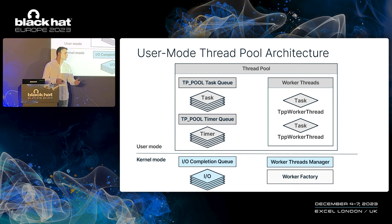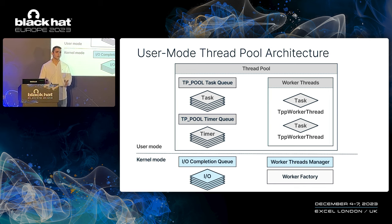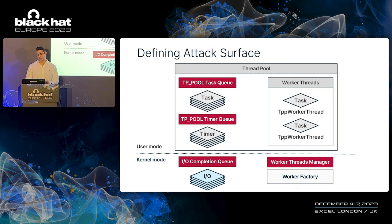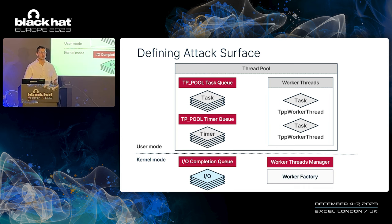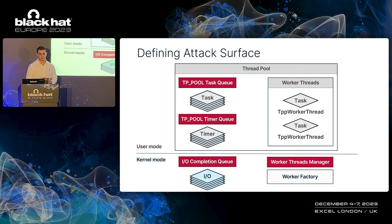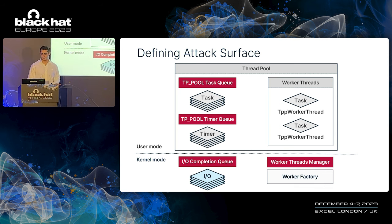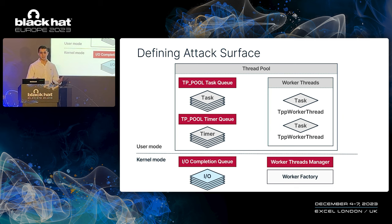Do not bother memorizing each part of this architecture, as we'll go over the relevant parts later on. In regards to attack surface, we have the different work queues, and we know that an insertion of a valid work item into one of these queues will result in the work item executing. Other than the queues, the worker factory, which serves as the worker threads manager, may be used to take over the worker threads.